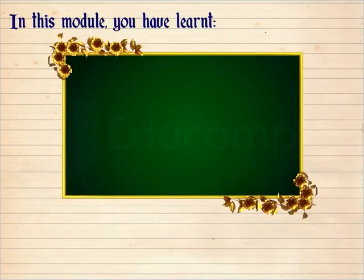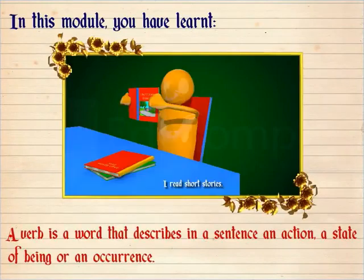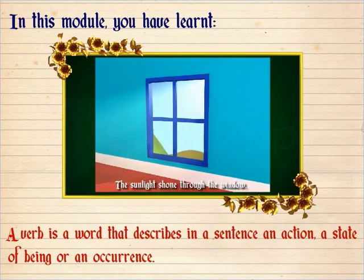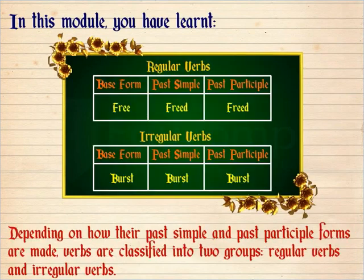In this module, you have learned: a verb is a word that describes in a sentence an action, a state of being, or an occurrence. Depending on how their past simple and past participle forms are made, verbs are classified into two groups: regular verbs and irregular verbs.